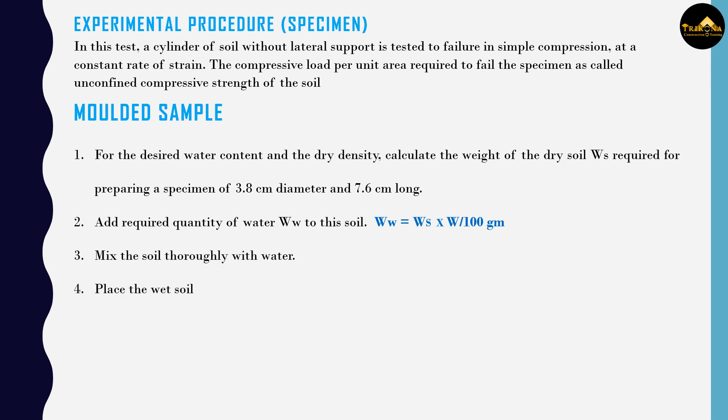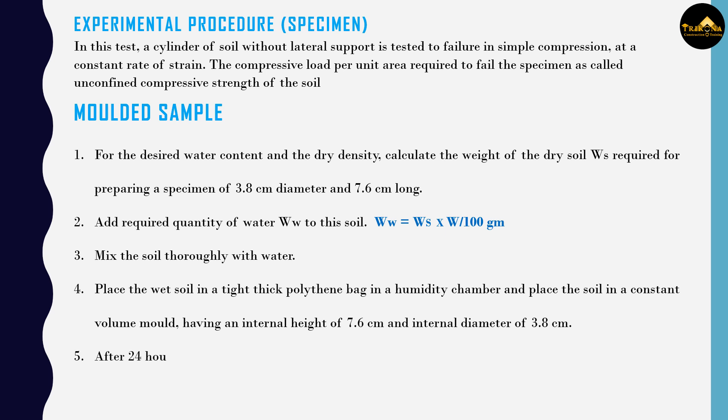Place the wet soil in a tight thick polythene bag in a humidity chamber. After 24 hours, take the soil from the humidity chamber and place it in a constant volume mold having an internal height of 7.6 cm and internal diameter of 3.8 cm.